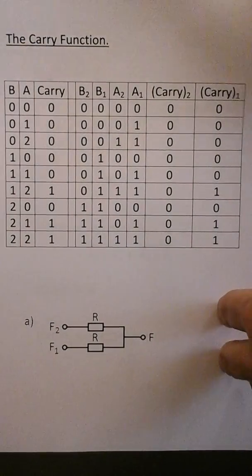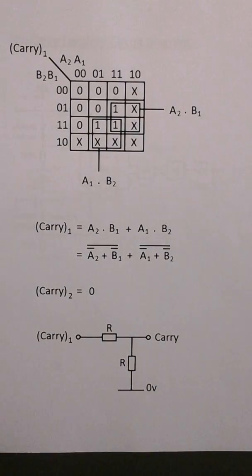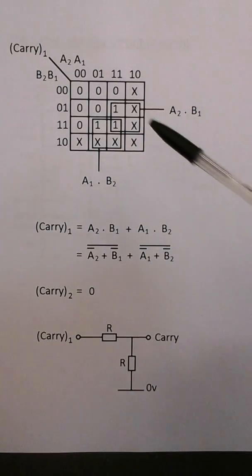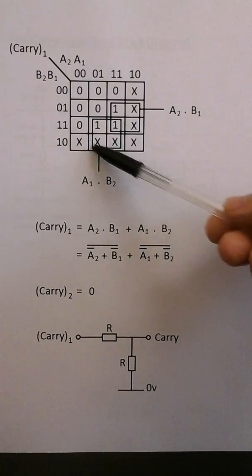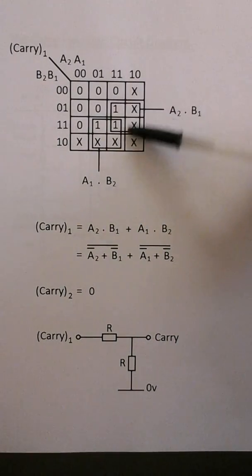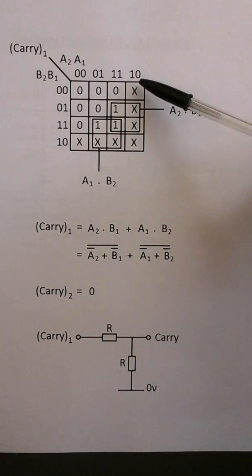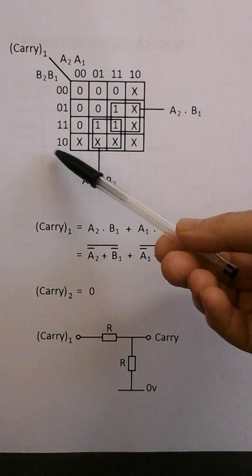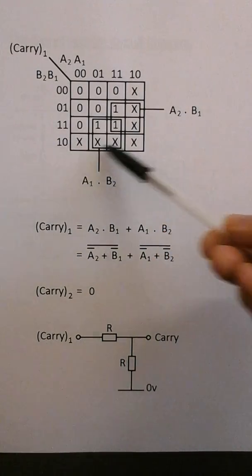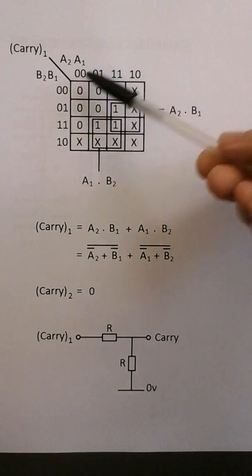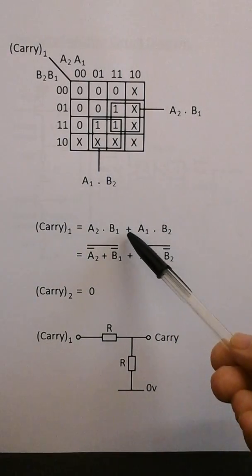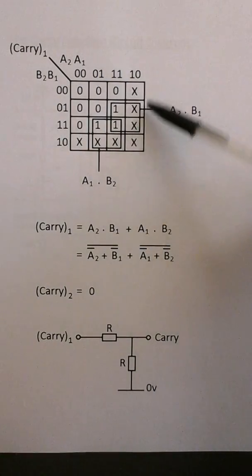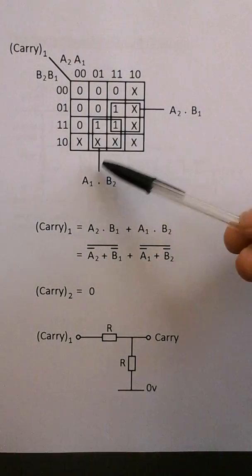There we have the Karnaugh map for carry1. We're looping the ones here. This loop is a2 and b1. This loop is a1 and b2. Here we have the can't-happen states where a2 is one and a1 is zero, and similarly b2 is one and b1 is zero, leaving nine valid entries in the Karnaugh map. So carry1 equals a2 AND b1, OR a1 AND b2.